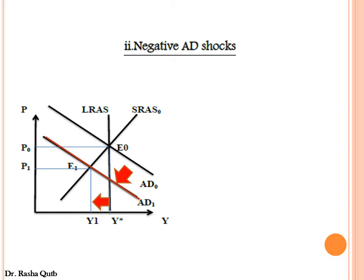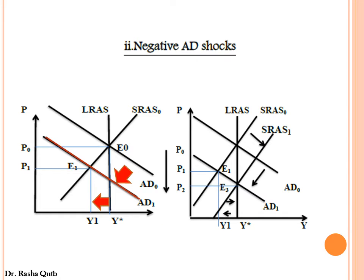In this case we have a recessionary gap. When we have a higher potential level of output, unemployment would be high and wages would decrease. A reduction in wages affects the SRAS curve — SRAS shifts rightward, and the economy returns to the potential level of output, with the gap removed at a lower price.